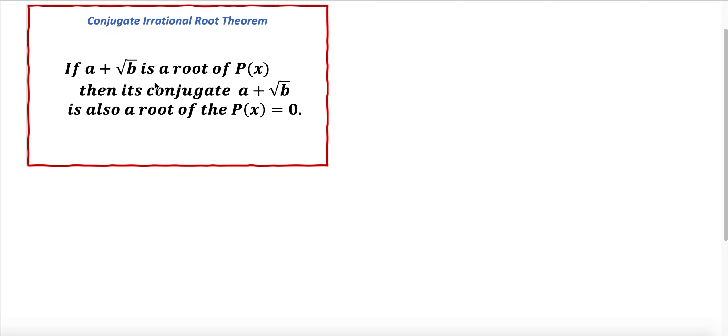If a plus square root of b is a root of polynomial function p of x, then its conjugate a minus square root of b is also a root of the polynomial function p of x.